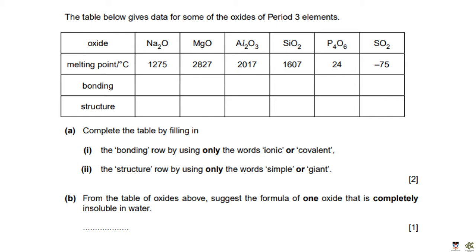A table gives data for oxides of period 3 elements, and we complete it by identifying bonding as ionic or covalent. Sodium oxide: metal–non-metal, so ionic. Magnesium oxide: metal–non-metal, so ionic. Aluminium oxide: metal–non-metal, so generally ionic, but it does have a degree of covalent character, so either ionic or covalent is accepted. Silicon dioxide: covalent, between two non-metals. Phosphorus oxide and sulfur dioxide are also both covalent.